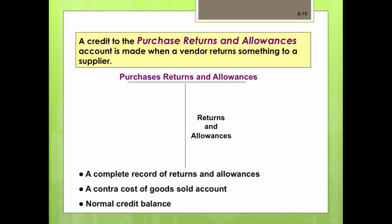Purchase returns and allowances are entered in the purchase returns and allowances account, not in the purchases account. Managers analyze this account to identify problem suppliers. It is a contra expense under cost of goods sold. The normal balance of cost of goods sold accounts is on the debit side, while the purchase returns and allowances account has a normal credit balance.